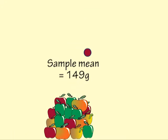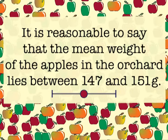We use a confidence interval to express the range in which we are pretty sure the population parameter lies. In this case, the population parameter is the mean weight for all the apples in the orchard.